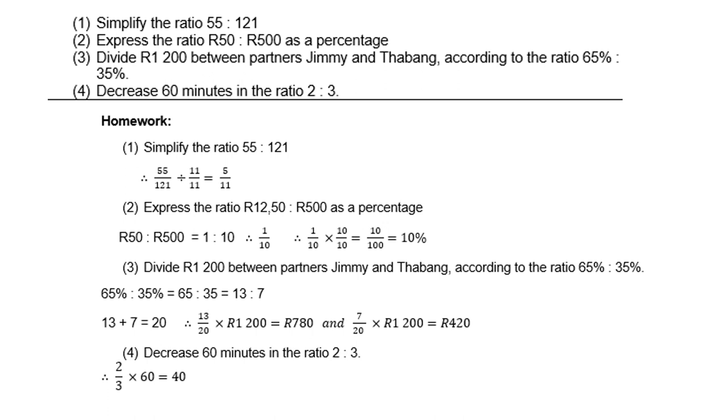Let's look at a few examples. Simplify the ratio 55 is to 121. So 55 is to 121, write as a fraction. And then what you can do is you can divide both the 55 and the 121 by 11 to give you 5 over 11.